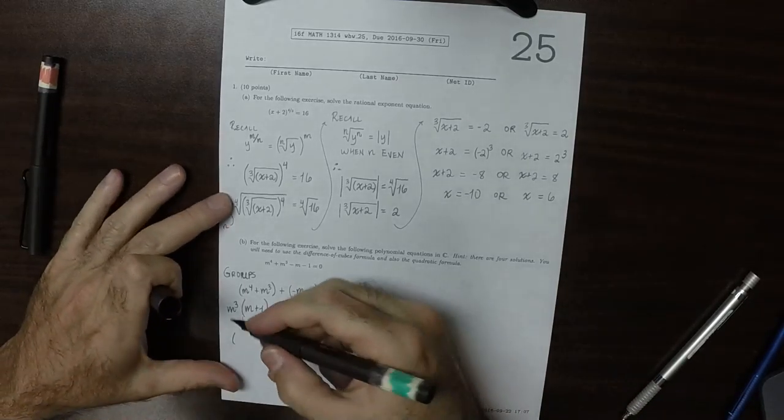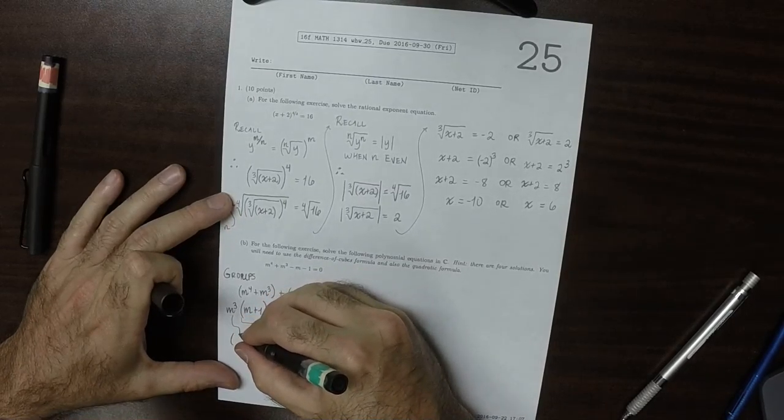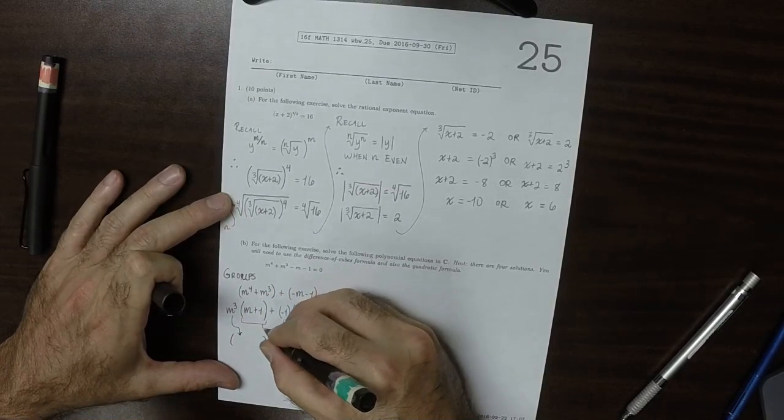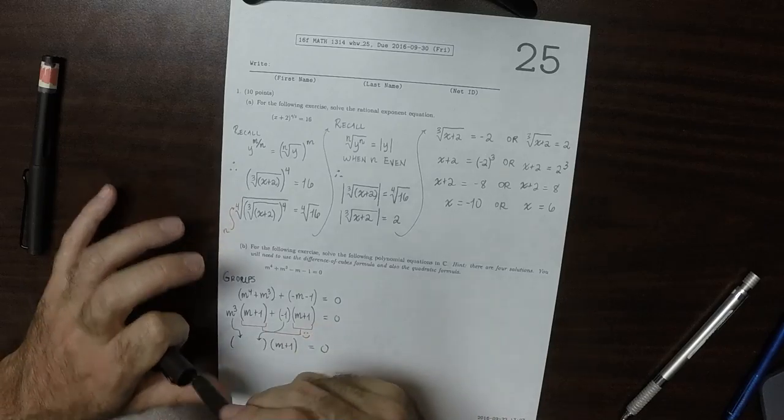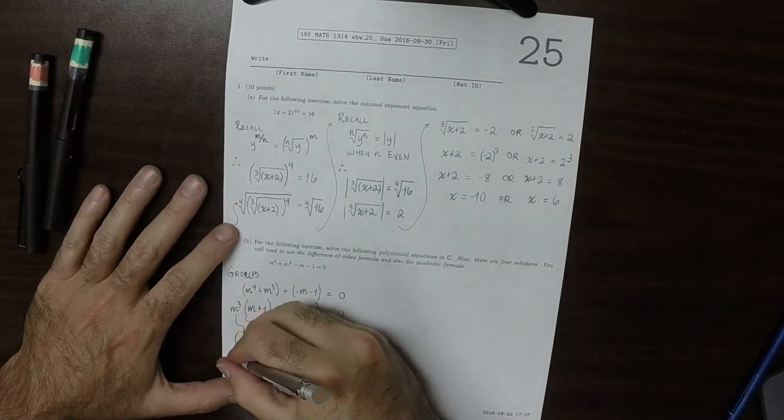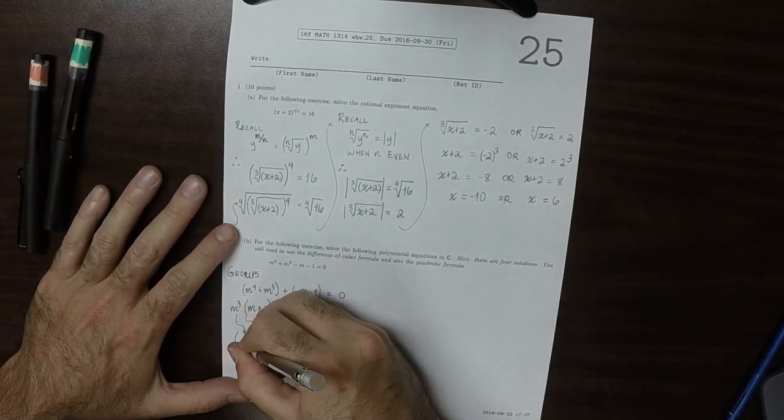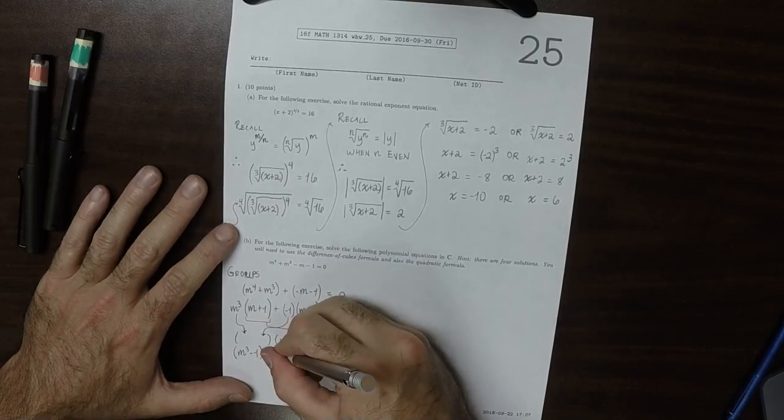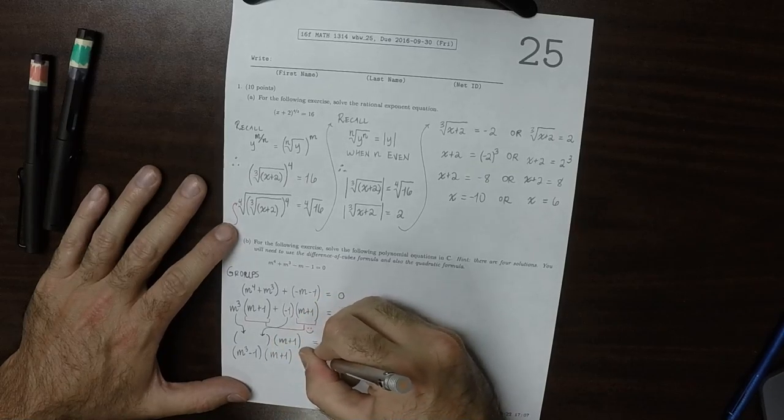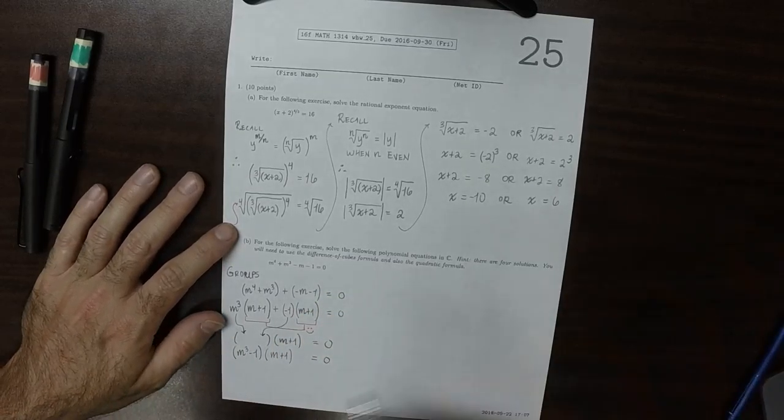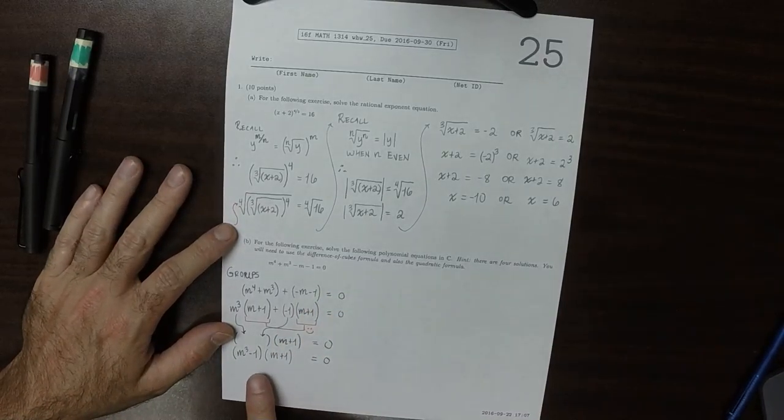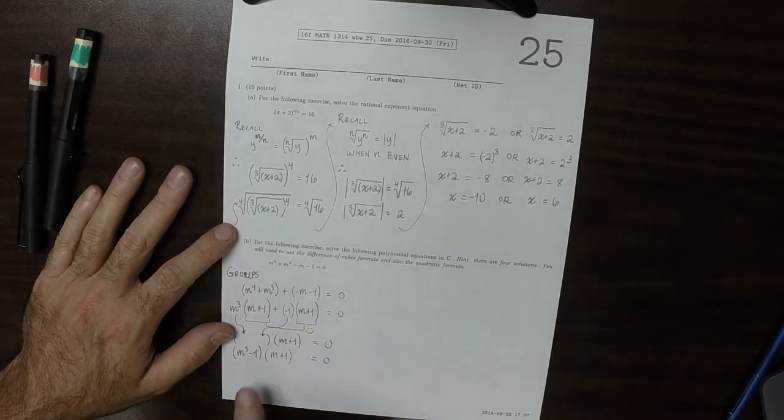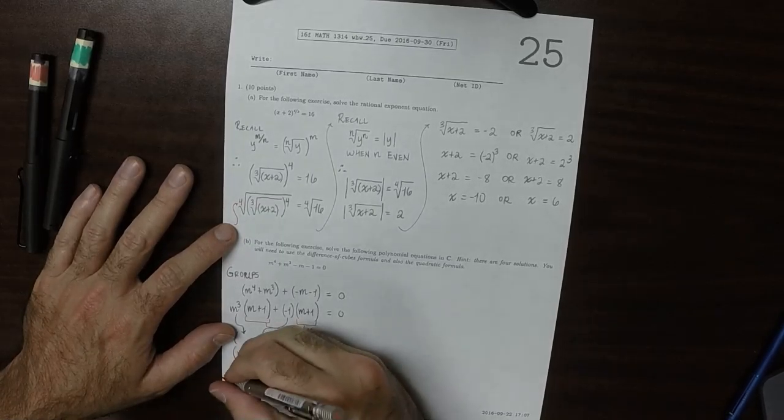That also means that m plus 1 can be factored out. And the other terms get routed to their respective positions. So that would be m cubed minus 1 multiplied by m plus 1 is equal to 0.